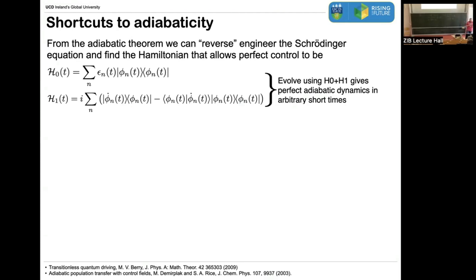Big energy gaps, I can drive the system fast. Small energy gaps, I have to drive the system very slowly. If I can take the spectral decomposition of my Hamiltonian, that information can be recast into a way in which I can determine what I would need to do in order to suppress all those transitions from the outset — what generator I need to use that will give me an effective adiabatic dynamics, regardless of how violently I'm ramping the system. You work through the math and it's this additional term, this H1 term. If I add this and evolve my system according to the total generator H0 plus H1, I will get an effective adiabatic dynamics in arbitrarily short times.